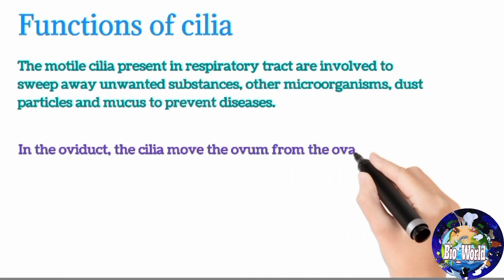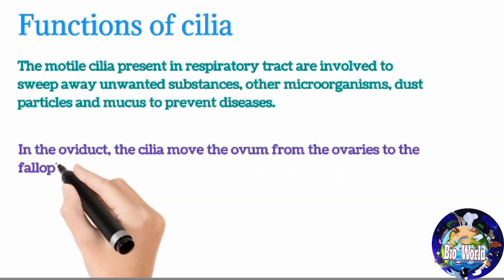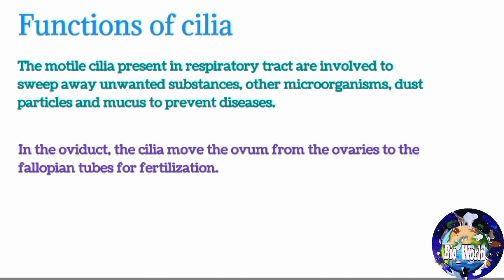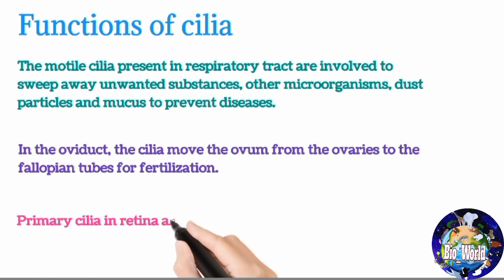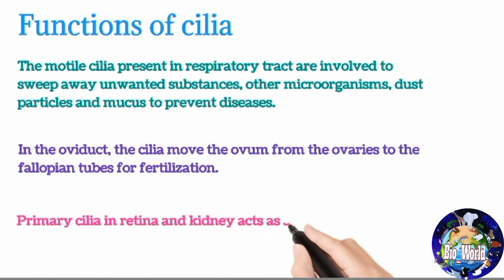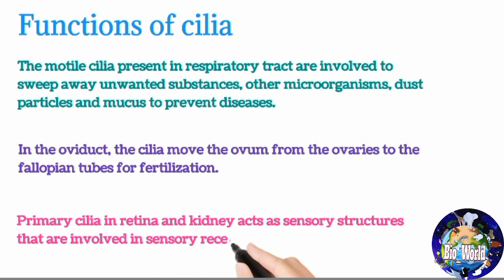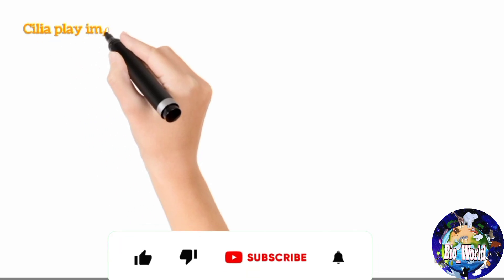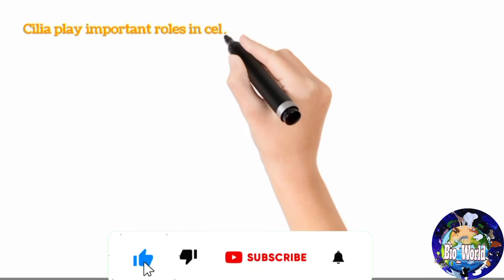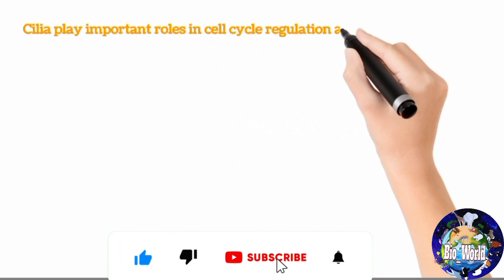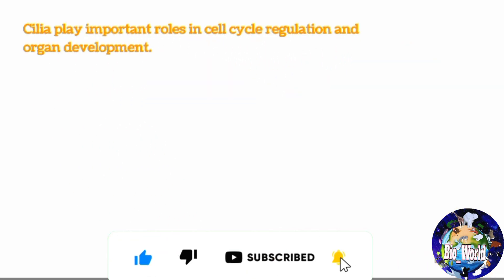Primary cilia in the retina and kidney act as sensory structures involved in sensory reception. Different cilia also play important roles in cell cycle regulation and organ development.